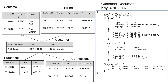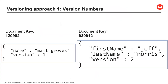There are three versioning approaches for managing data changes. First, using version numbers in your document — version one has a name field, version two splits it into first name and last name. Application code can check the version number and use the appropriate class, or build logic into the classes to handle both formats, where name becomes a computed field.